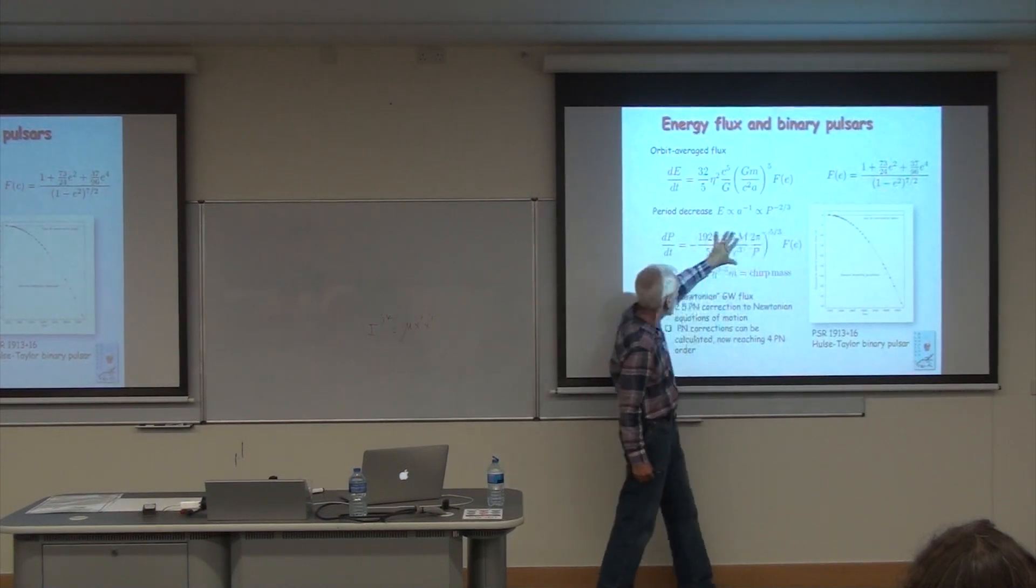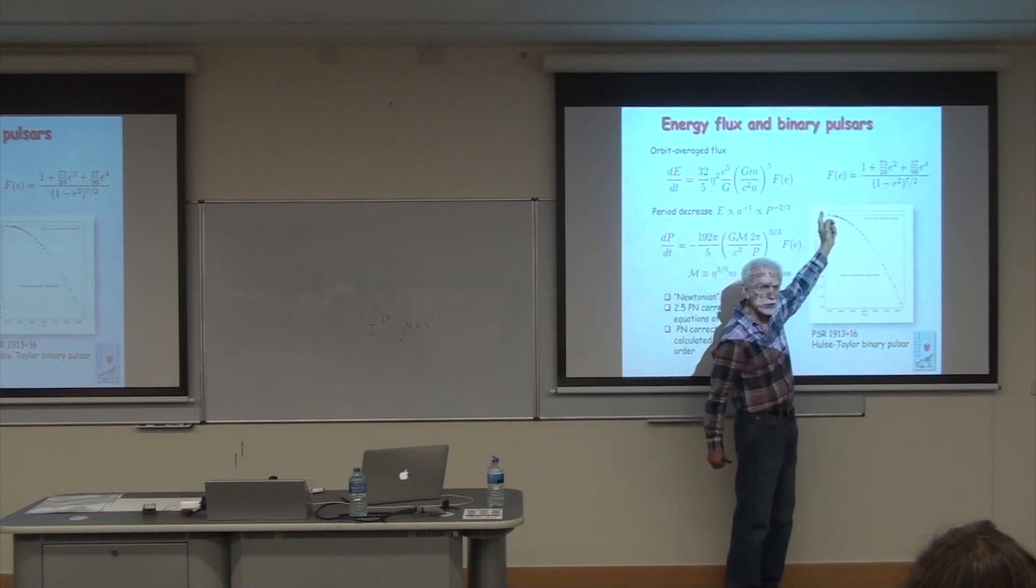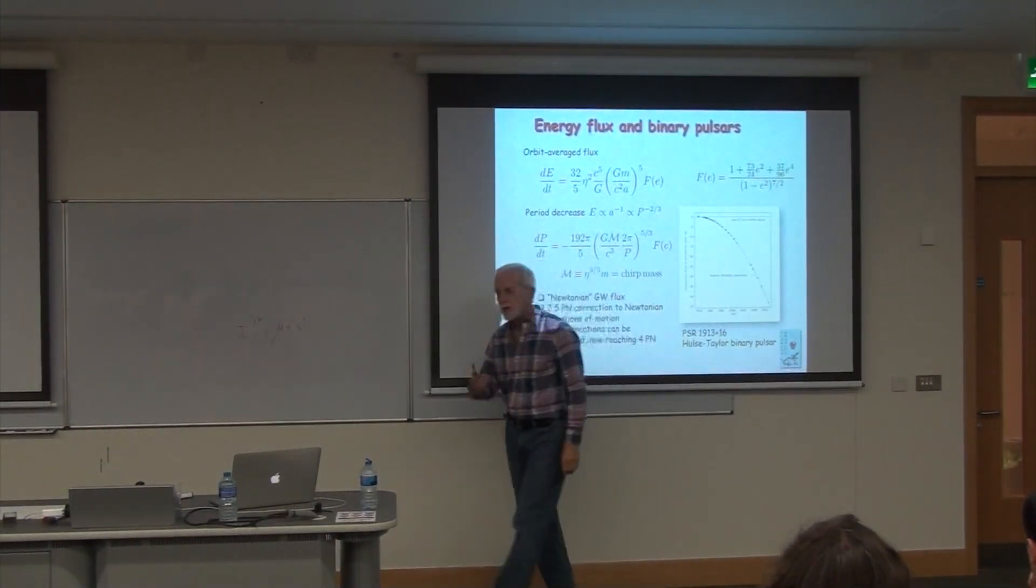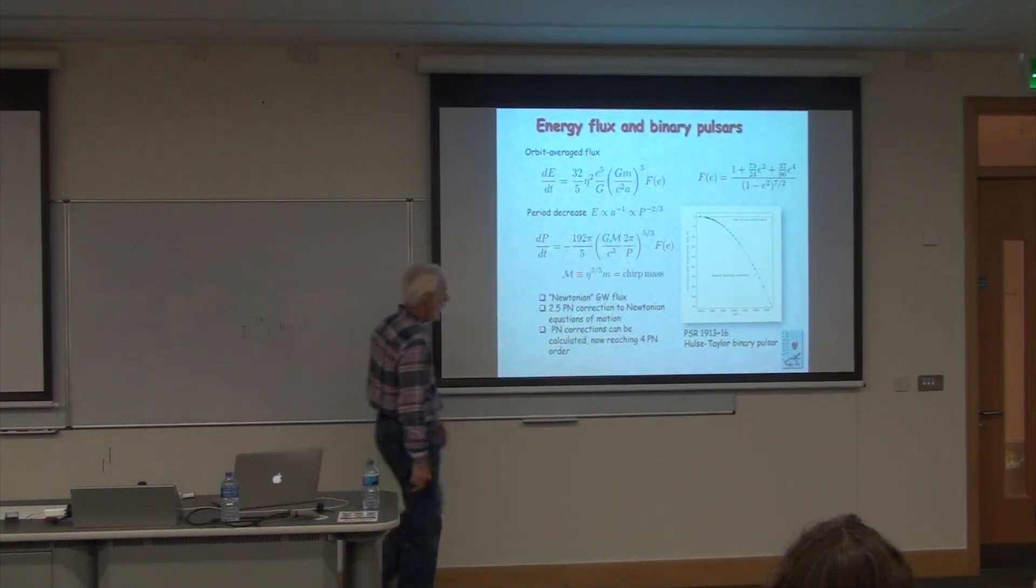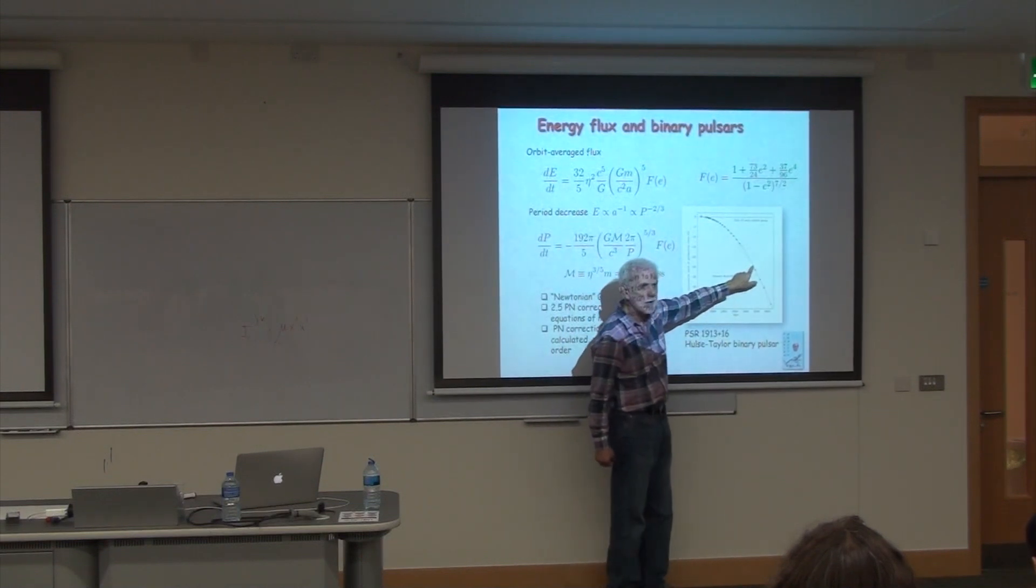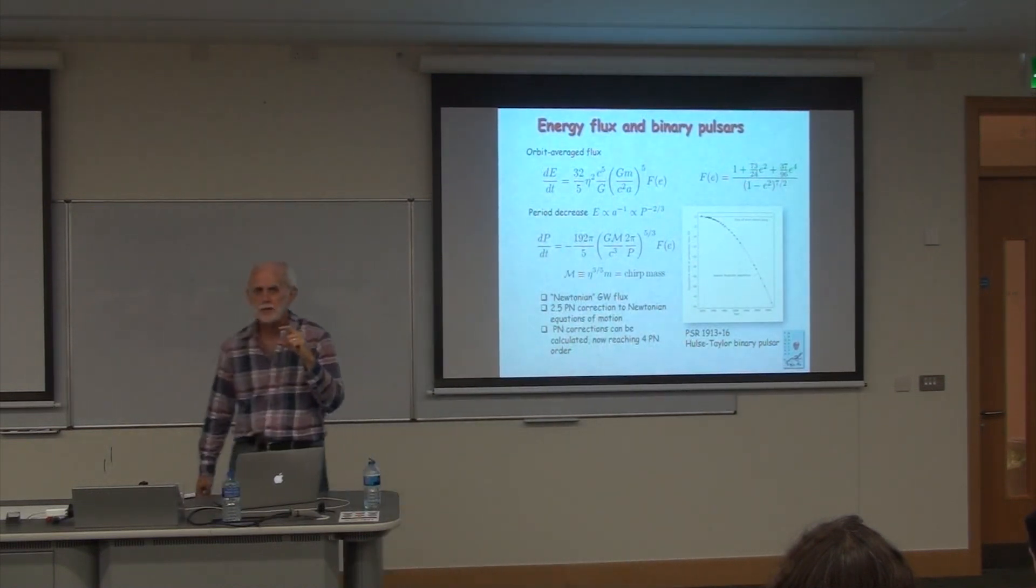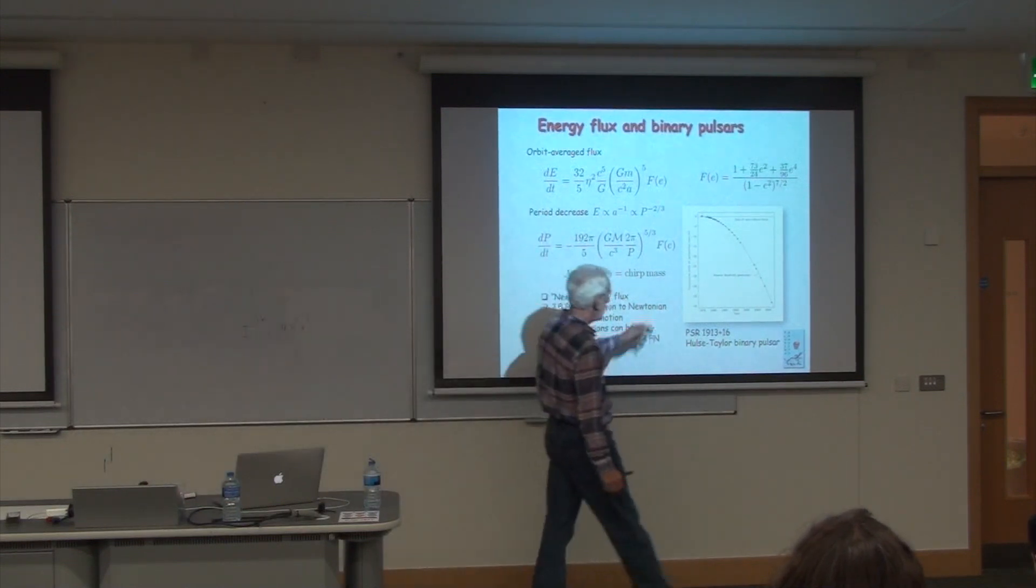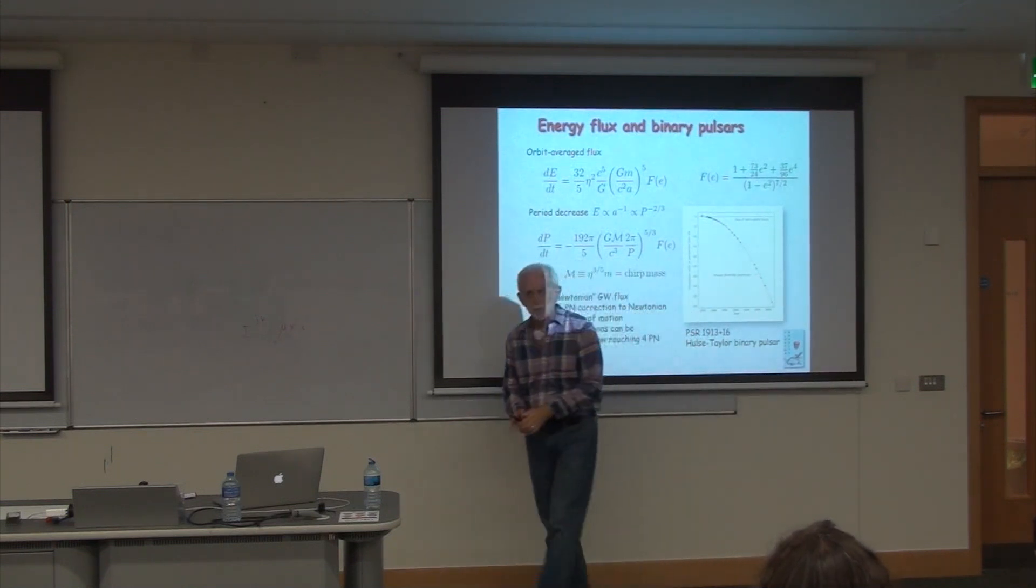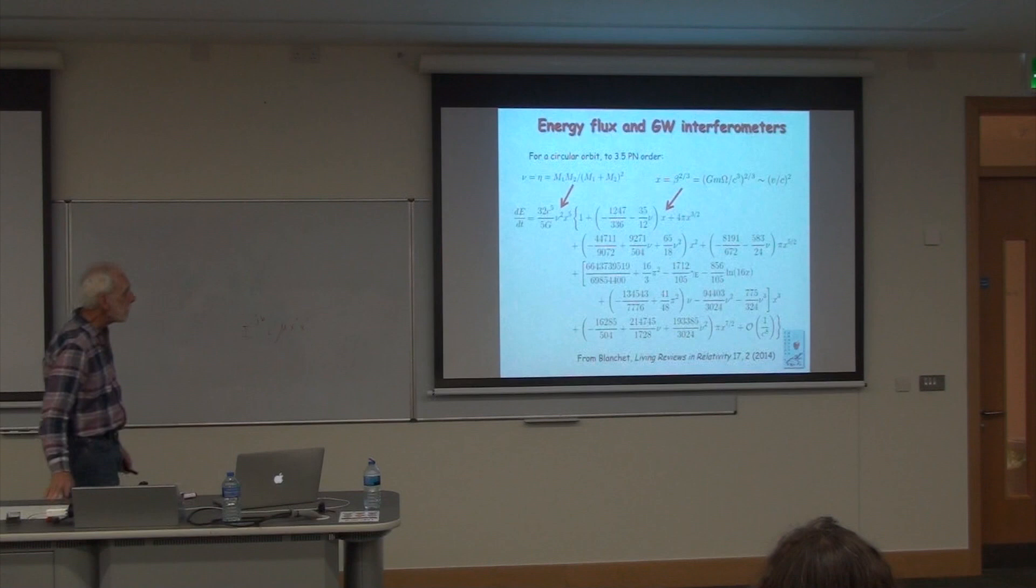General relativity predicts this quadratic behavior, and that's what this line is. It's not a fit. It's the prediction, you know these masses. This gap is about six years when the Arecibo radio telescope was shut down for a major upgrade and overhaul. When they turned it back on, they measured the system, measured the time of periastron advance, and it fell right on the curve. These dots are about 400 times larger than the error bars on the actual measurements. So I mean, it's really extraordinary. Over now almost 40 years, it just continues to follow the general relativity prediction. It's a beautiful confirmation of the quadrupole formula.